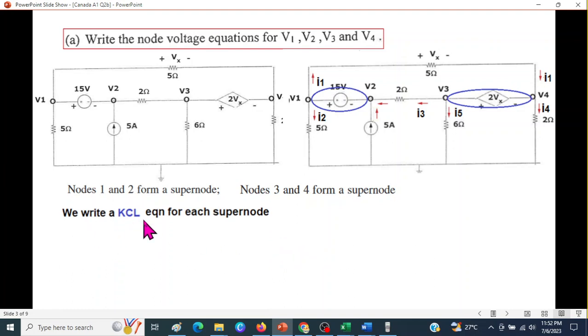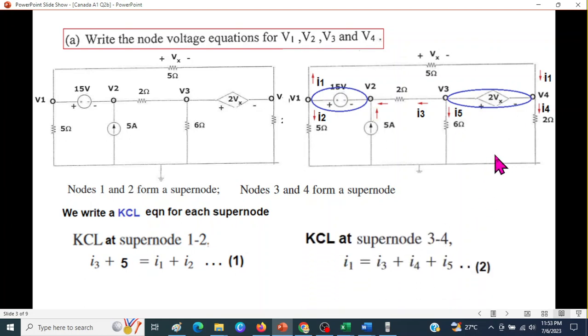And now, we will write KCL equation at the supernodes. So, writing KCL equation for each supernode. Now, if you look here, entering, current entering is I3, is entering, just remember this is one node, so I3 entering, 5 entering, so I3 plus 5, and leaving is I1 and I2, so I1 and I2. This is one of the KCL equations. Similarly, at the second node, we have current entering is I1. And leaving is I3, I4, and I5. So, this is our second KCL equation.